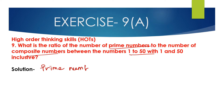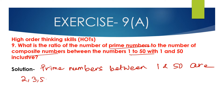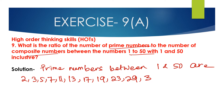Prime numbers have only 2 factors: 1 and the number itself. So prime numbers between 1 and 50 are: 2, 3, 5, 7, 11, 13, 17, 19, 23, 29, 31, 37, 41, 43, 47. These are the prime numbers between 1 and 50.